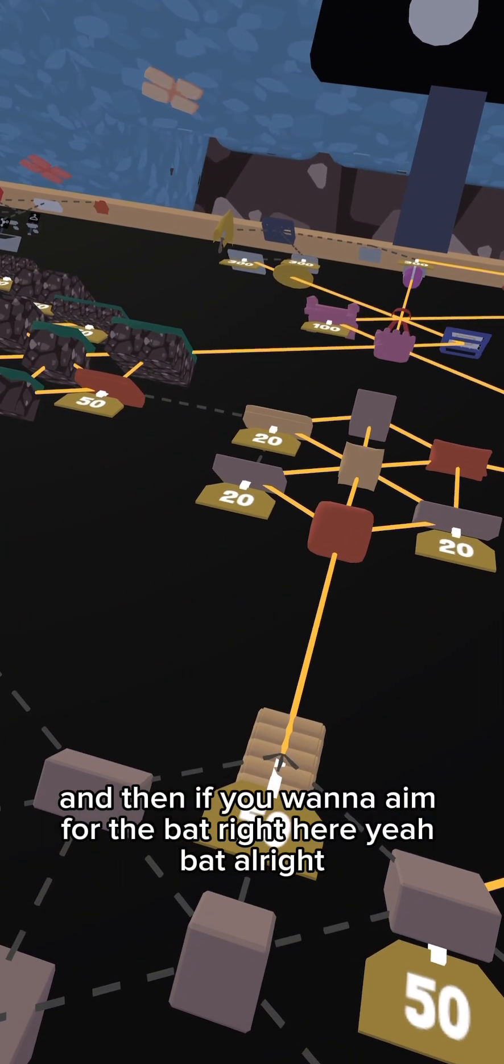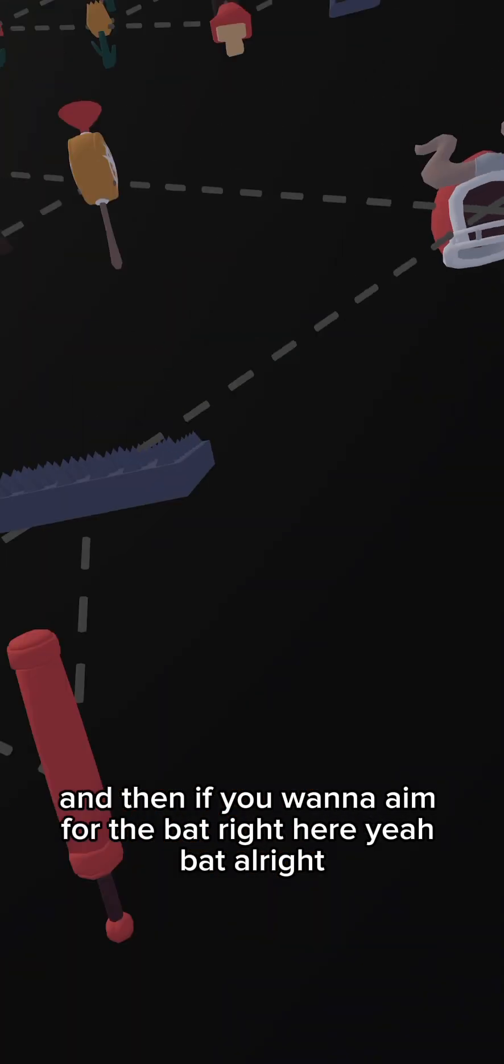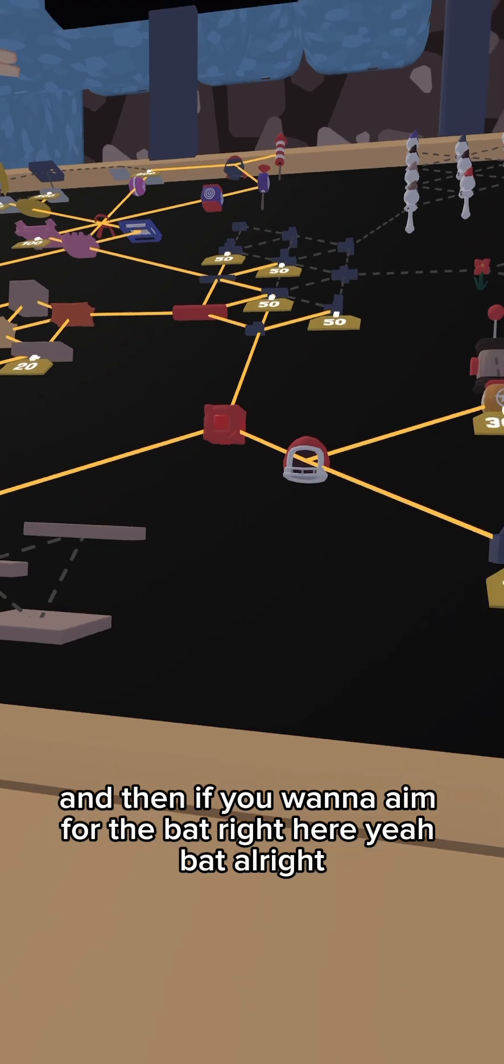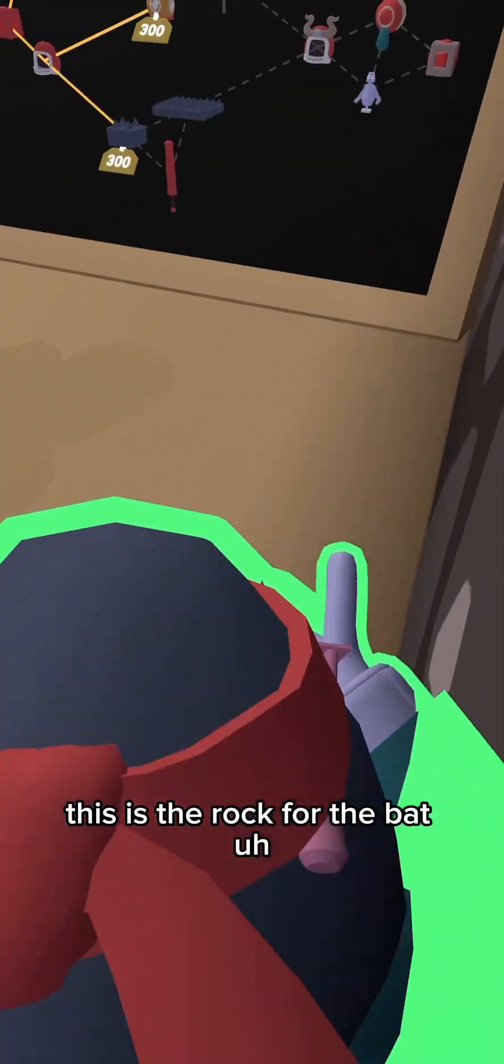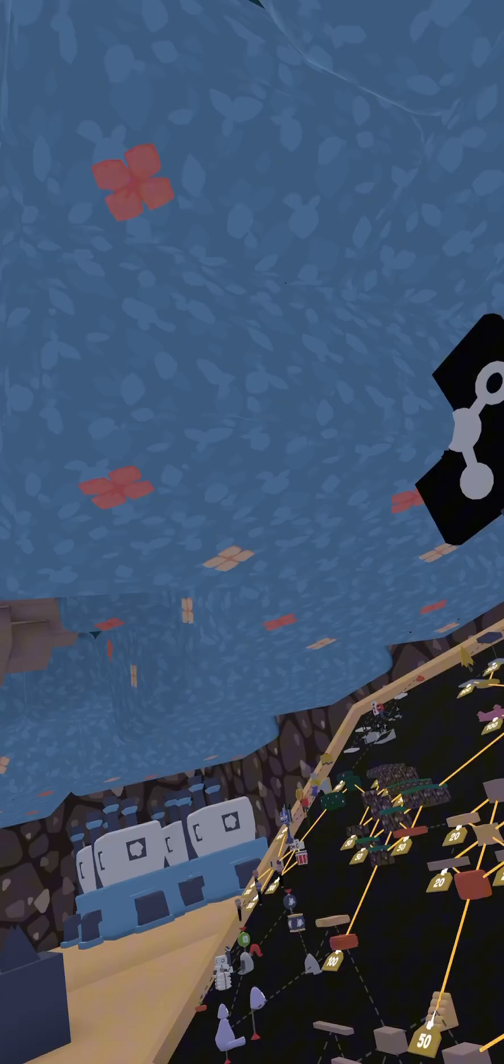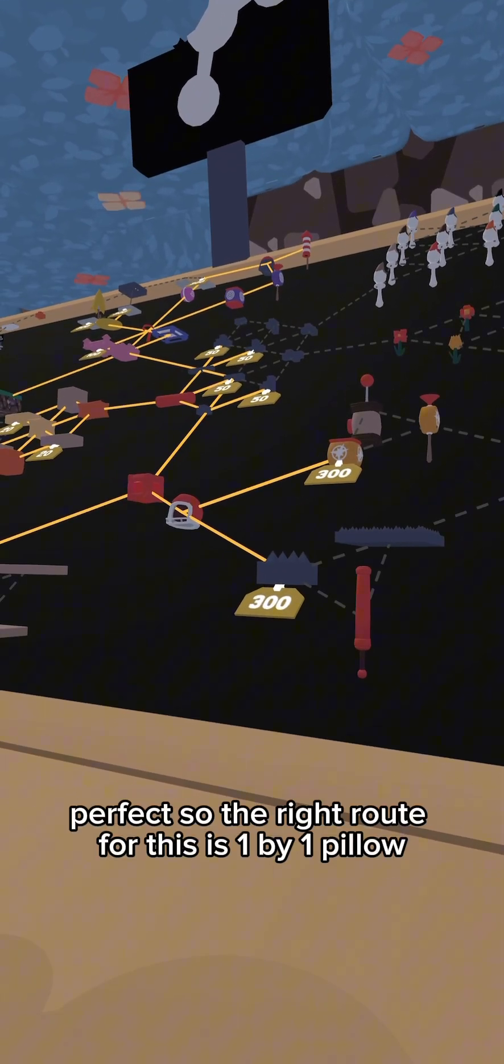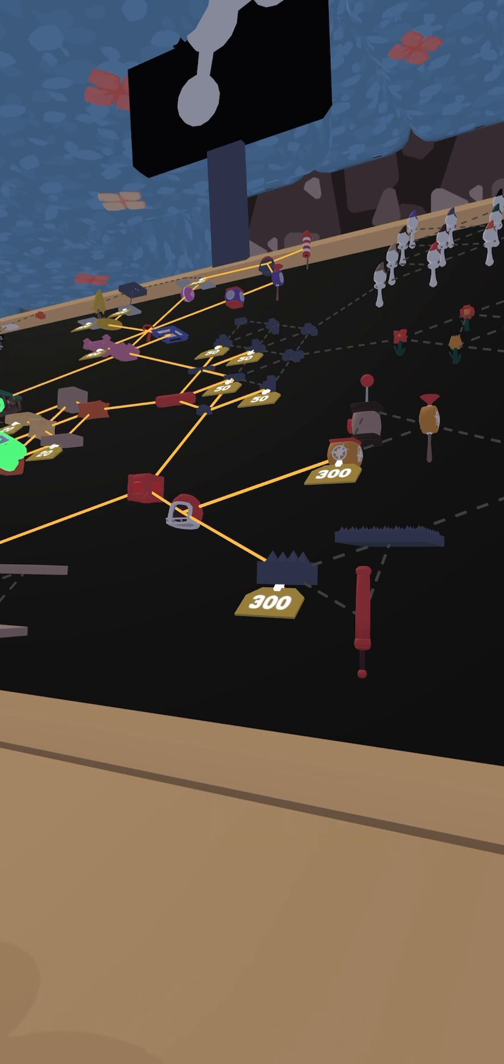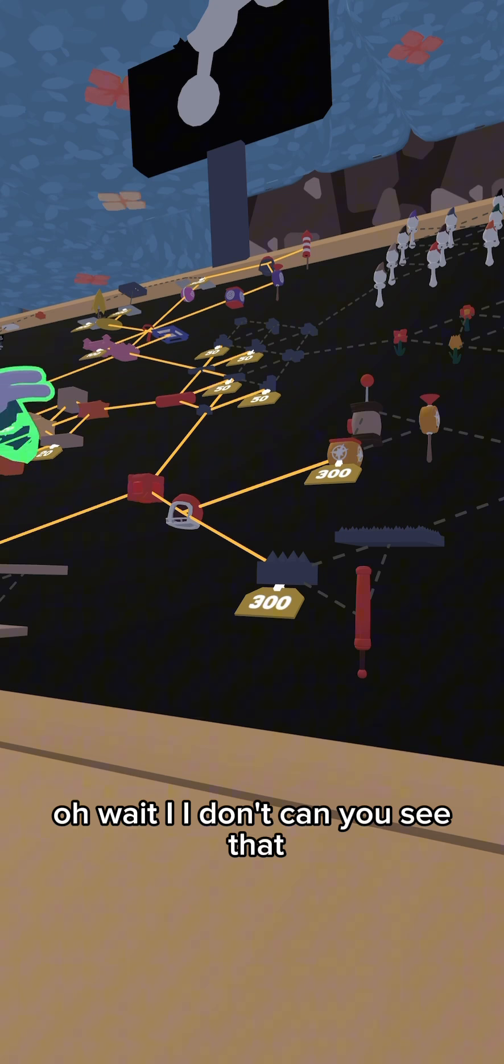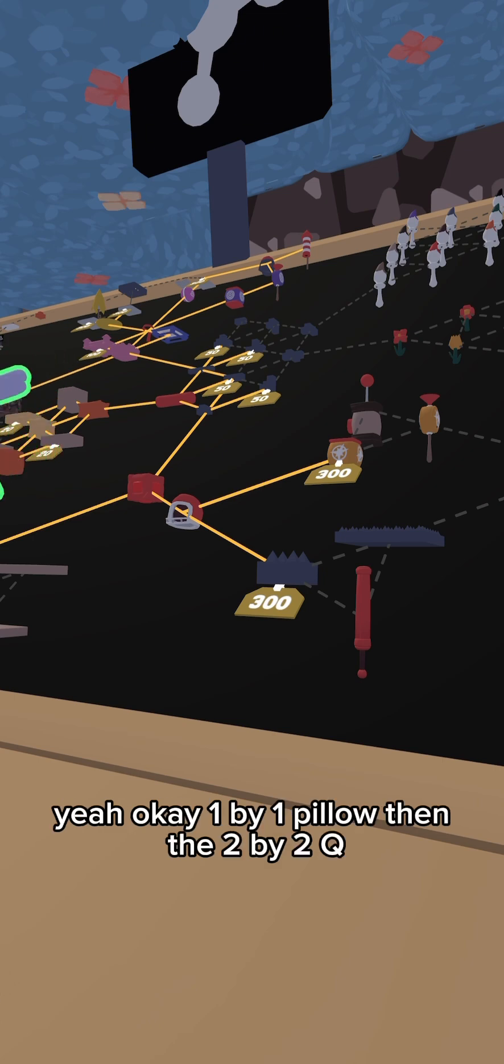And then if you want to aim for the bat right here, this is the route for the bat. So the right route for this is one by one pillow - can you see that? Yeah, okay. One by one pillow, then the two by two Q.